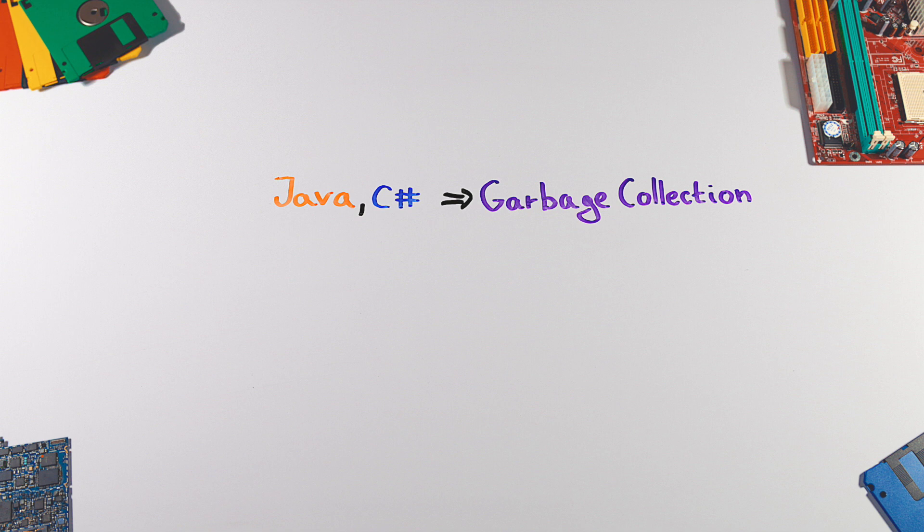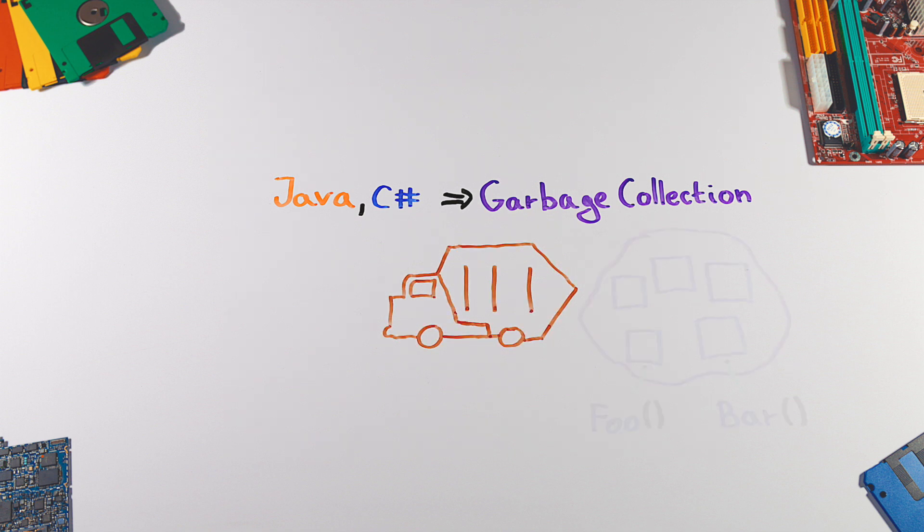Languages like Java and C-sharp are equipped with garbage collection. Garbage collection works as a background process at runtime which detects unused objects and removes them from the memory. An object is considered unused when it's unreachable, or in other words, there are no references to it.